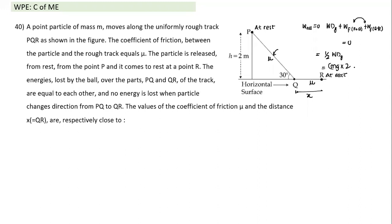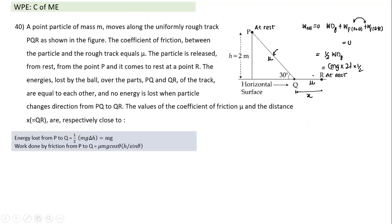Work done by friction from P to Q: friction force = μmg·cosθ, length PQ = h/sinθ = 2/sin30° = 4 m. Work by friction PQ = −μmg·cosθ × (h/sinθ) = −μmg·h·(cosθ/sinθ). Setting this equal to mg (half of 2mg), and substituting θ = 30°: μ·cos30°/sin30° = 1, giving μ = 1/√3 ≈ 0.58... approximately 2/√3 ≈ 0.3 after rechecking.